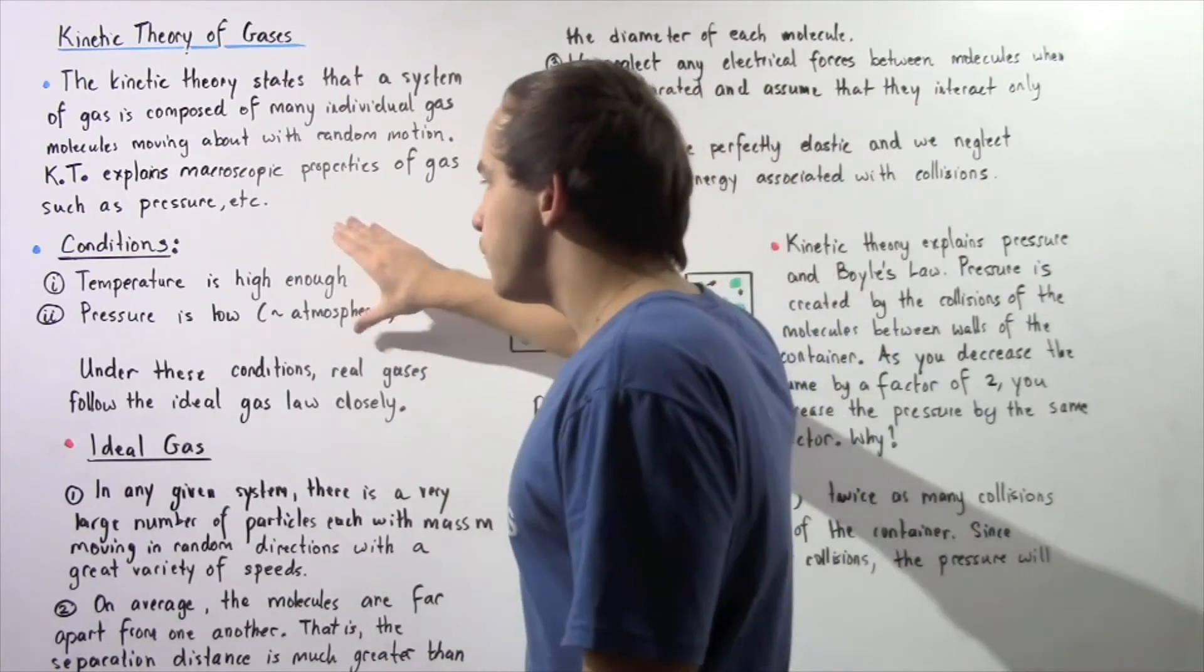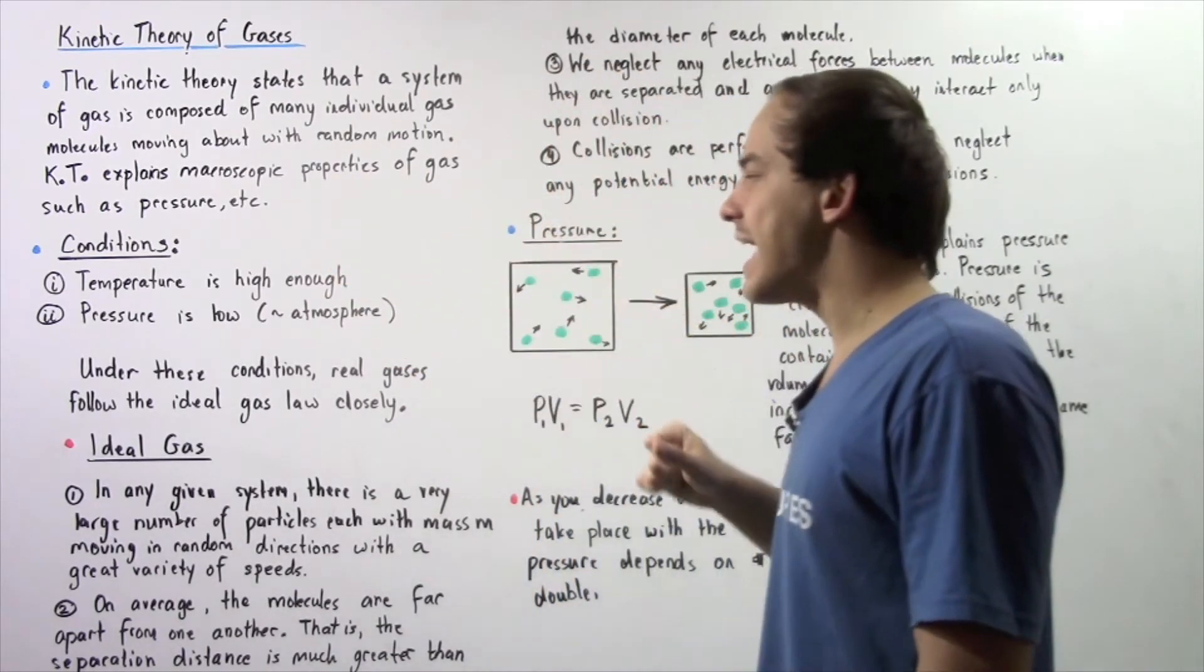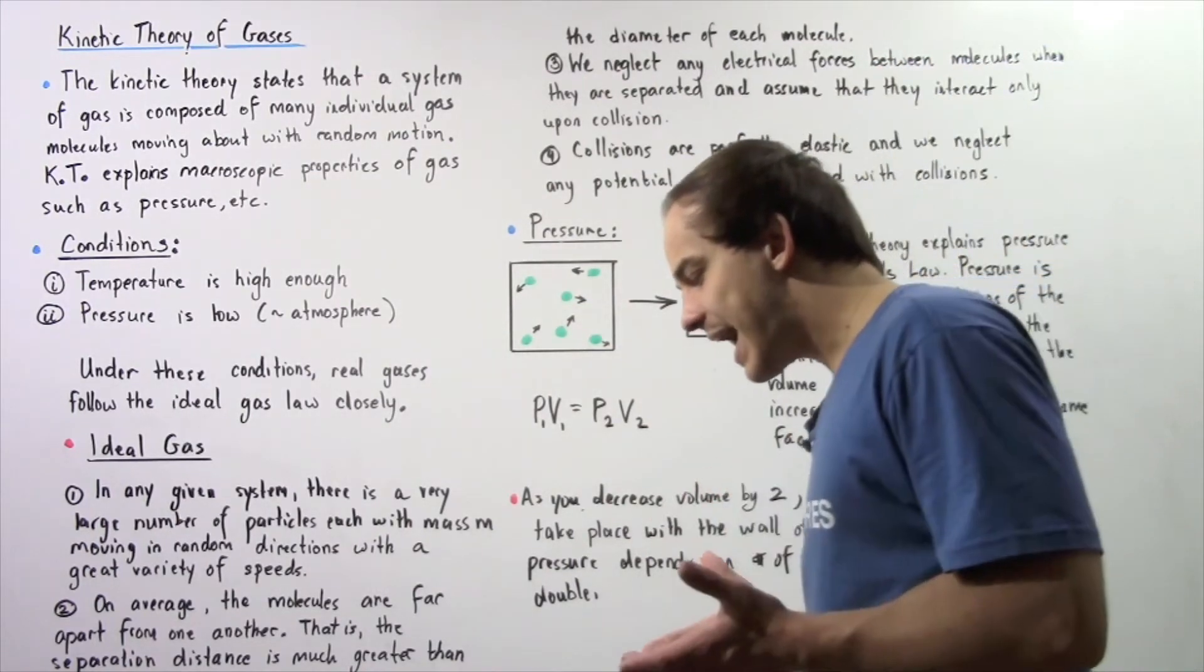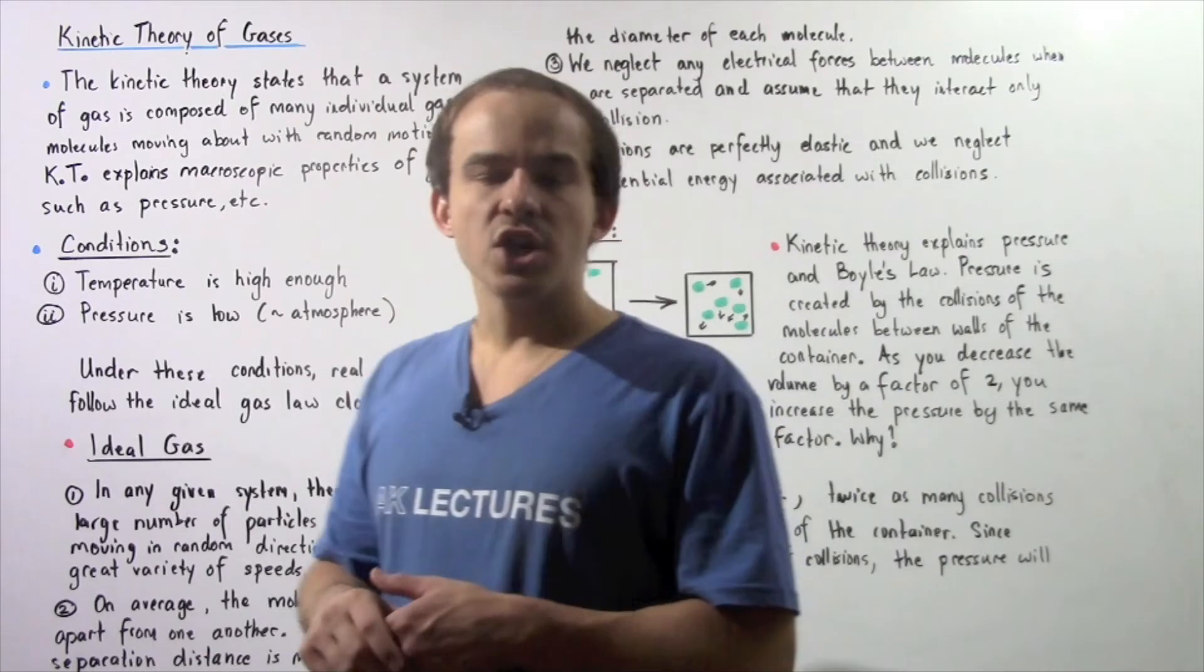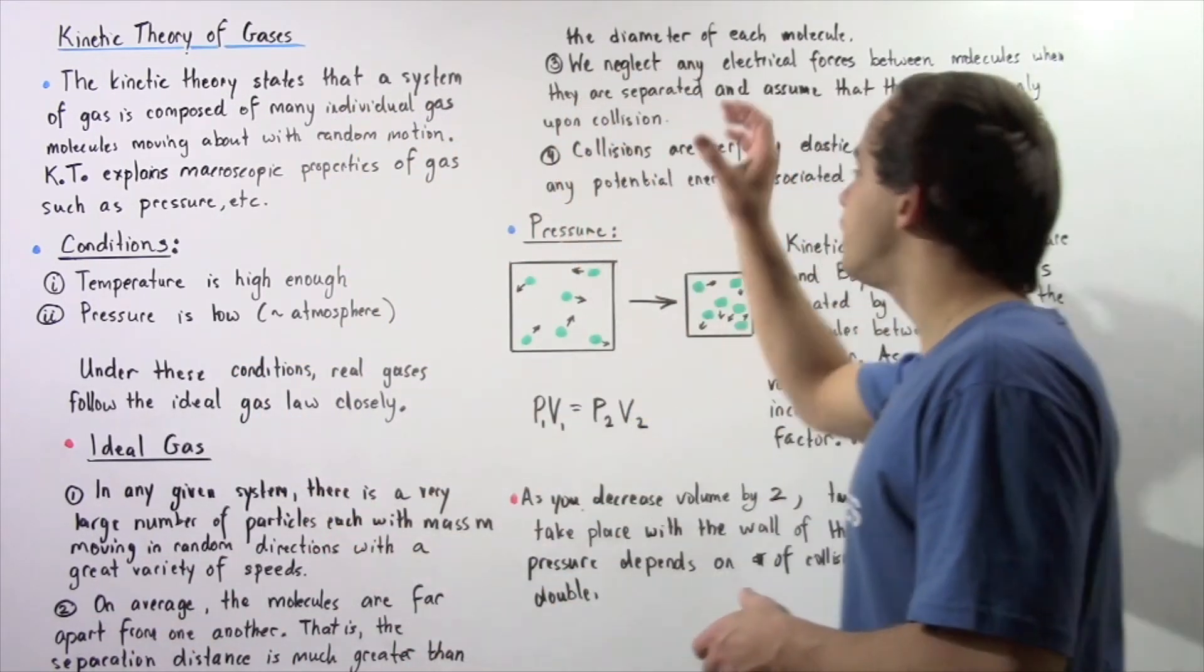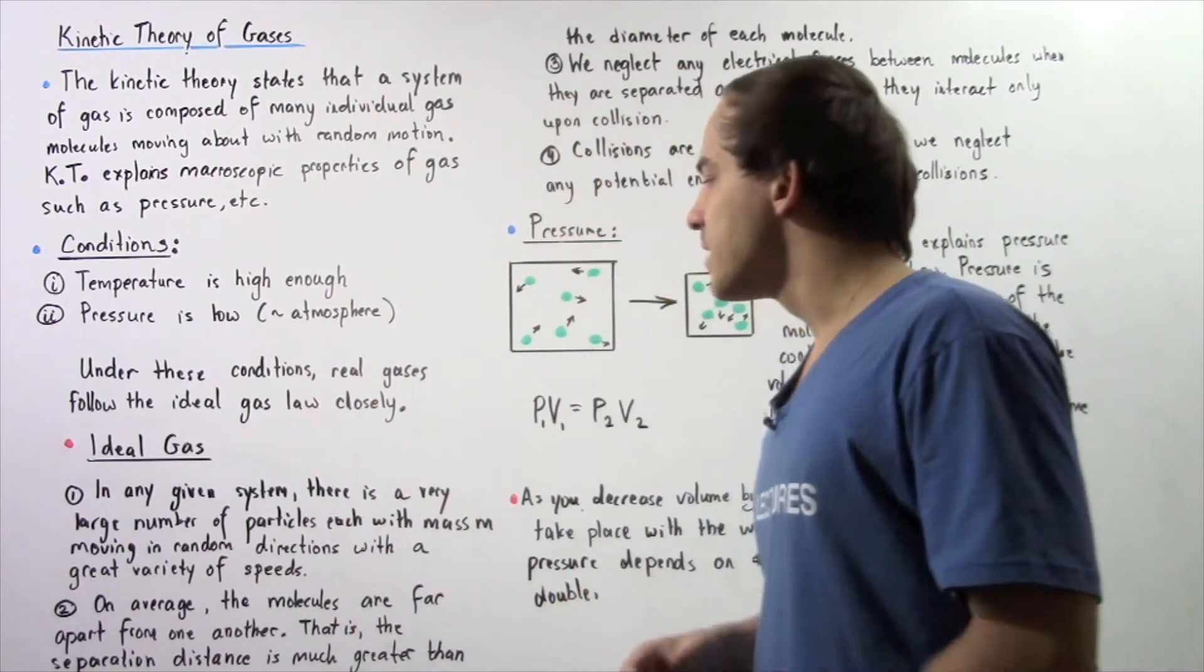So only if we have the following two conditions can we treat real gases as ideal gases. Now what exactly is an ideal gas? Well an ideal gas can be described using the following four important points.